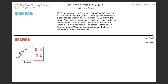Number 17: to get up on the roof, a person with mass 70 kilograms places a 6-meter aluminum ladder (mass 10 kilograms) against the house on a concrete pad, with the base of the ladder two meters from the house. The ladder rests against a frictionless plastic rain gutter. The center of mass of the ladder is two meters from the bottom; the person is standing three meters from the bottom. What are the magnitudes of the forces on the ladder at the top and bottom?